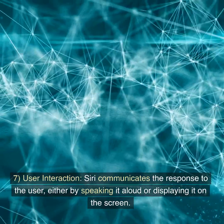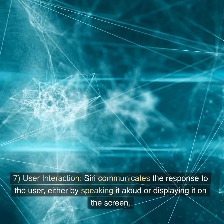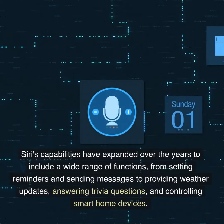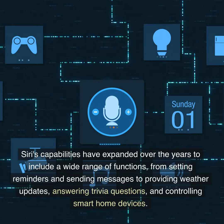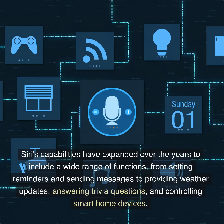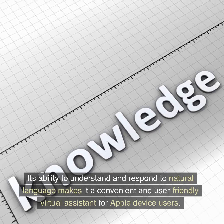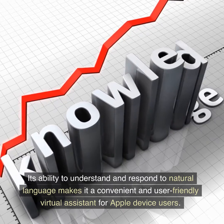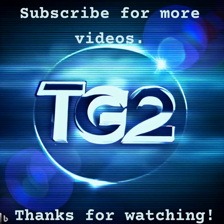User Interaction. Siri communicates the response to the user, either by speaking it aloud or displaying it on the screen. Siri's capabilities have expanded over the years to include a wide range of functions, from setting reminders and sending messages to providing weather updates, answering trivia questions, and controlling smart home devices. Its ability to understand and respond to natural language makes it a convenient and user-friendly virtual assistant for Apple device users. Subscribe for more videos.